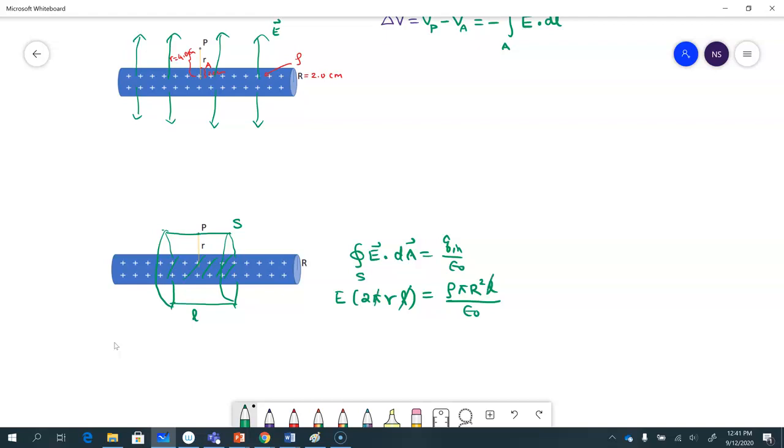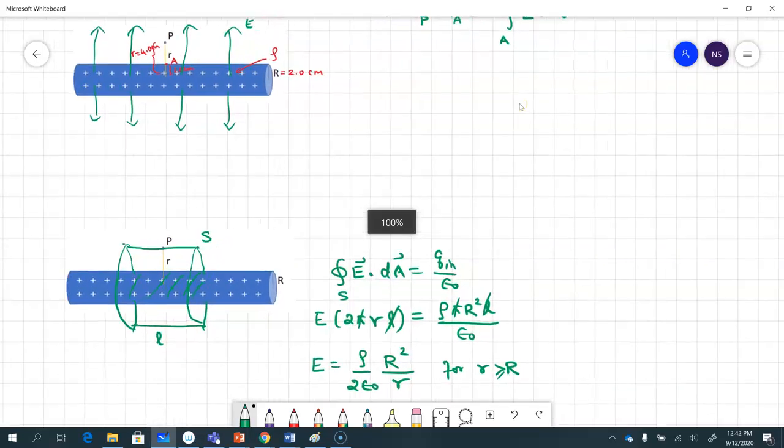So the L goes off, the π goes off, and I'll have my electric field to be rho divided by 2 epsilon naught times R squared divided by little r. This is for r greater than or equal to R. So now that I have that expression for the electric field, I can use that to figure out the electric potential.